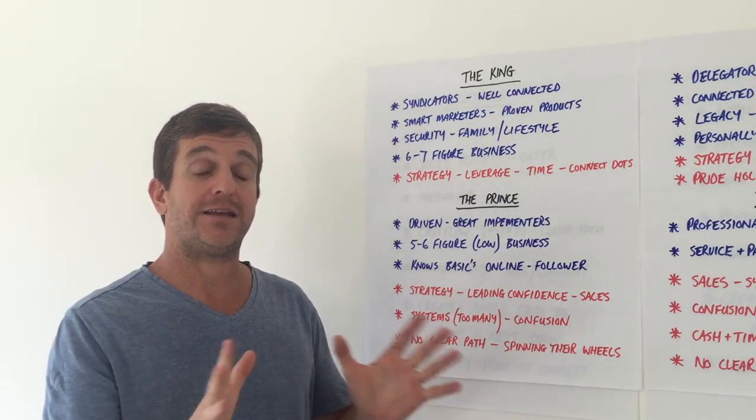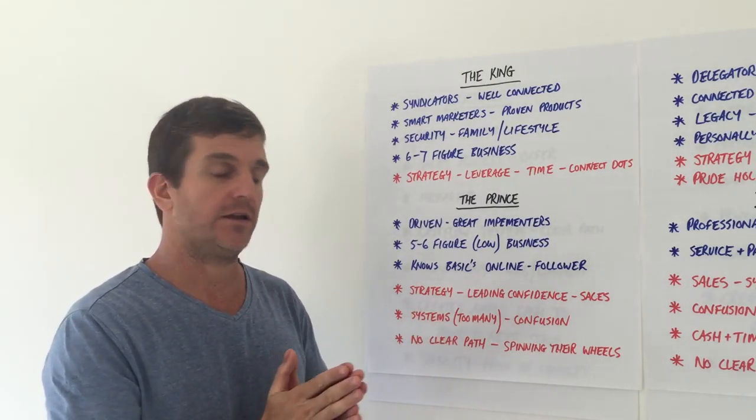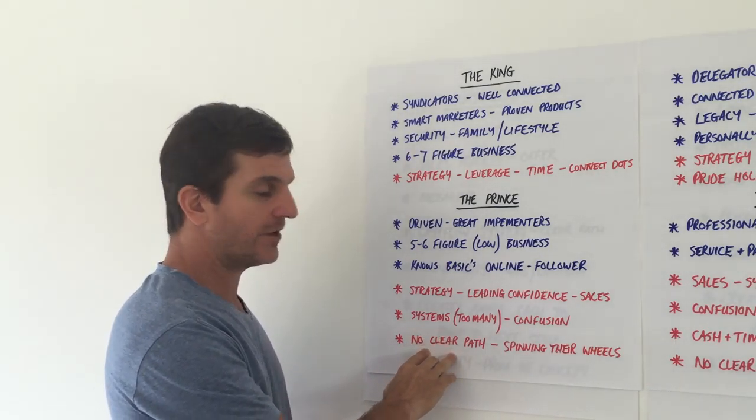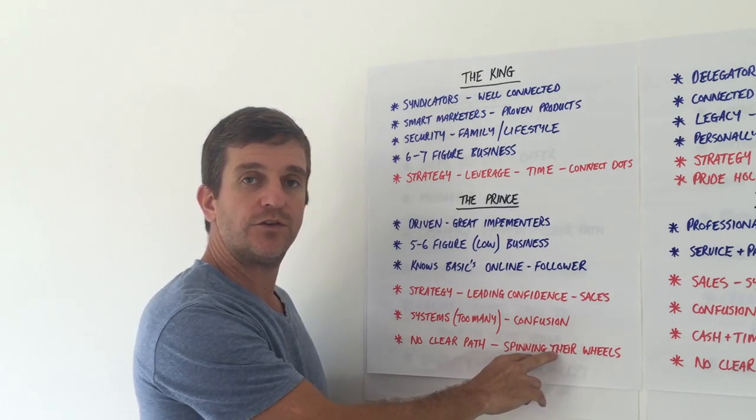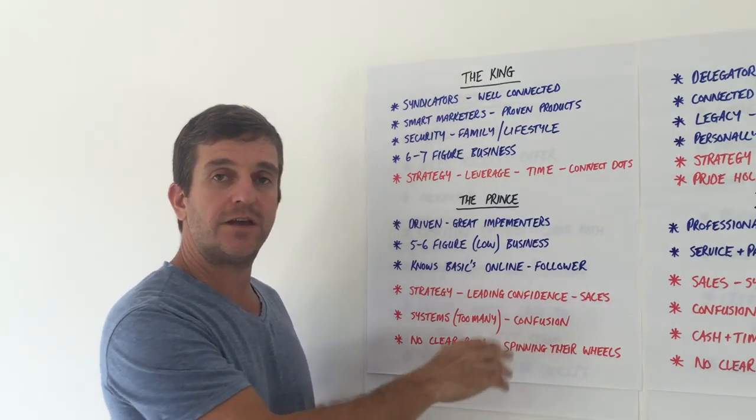Unwilling to let go of anything just in case you miss out. So no clear path forward - this is their big problem. Essentially they are spinning their wheels online, stuck at five figure, early six figure range, really unable to grow past that.